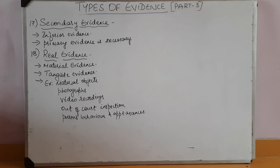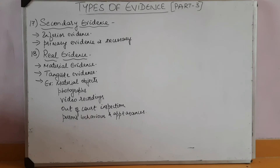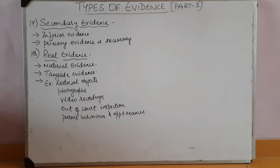The next evidence is real evidence, also known as material evidence. It is tangible evidence that the court can examine for itself. Tangible means which can be touched. Such evidence needs to be supported by a witness, preferably an expert witness who can explain its significance. Real evidence includes material objects, murder weapons in murder cases, photographs, position and state of the deceased body in a murder case, video recordings, out-of-court inspection, and a person's behavior and appearance.